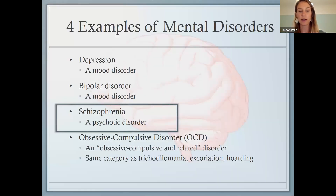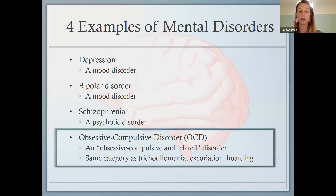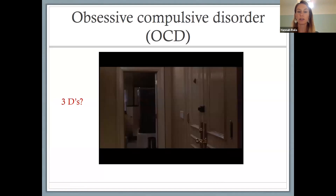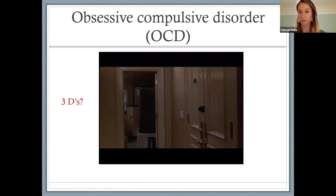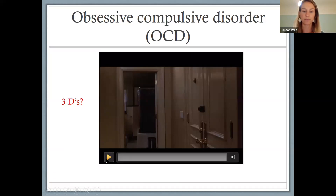This brings us to our last disorder: OCD. I'll start by showing a clip from the movie As Good As It Gets, in which Jack Nicholson's character has OCD. Without necessarily knowing what the symptoms of OCD are, type into the chat as you watch how you see the three Ds — focus on how you might expect these symptoms to cause dysfunction for the character, and how they might cause him distress.